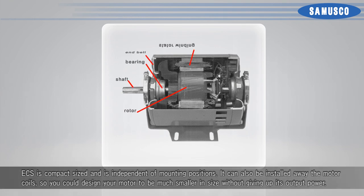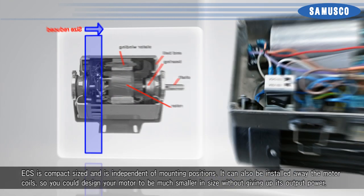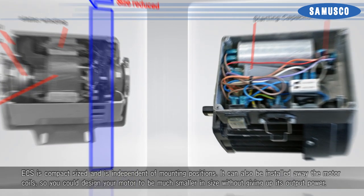ECS is compact-sized and is independent of mounting positions. It can also be installed away from motor coils, so you could design your motor to be much smaller in size without giving up its output power.